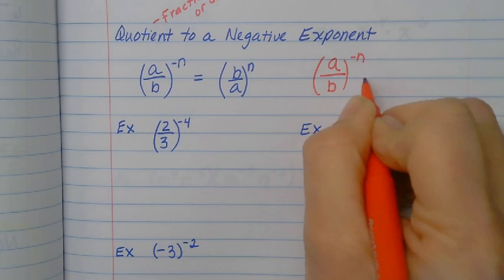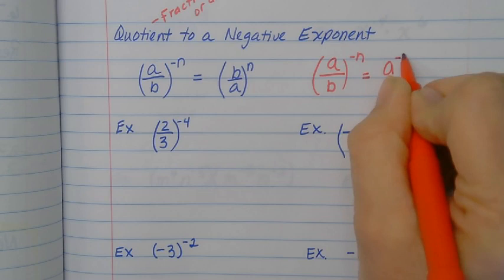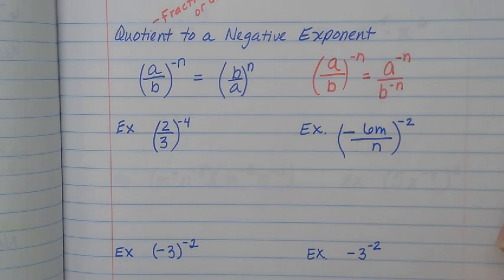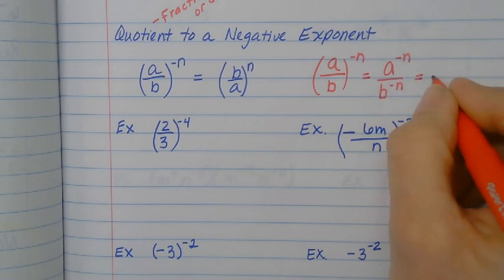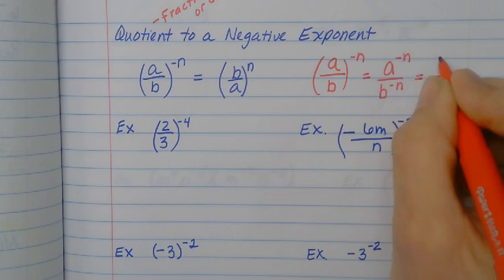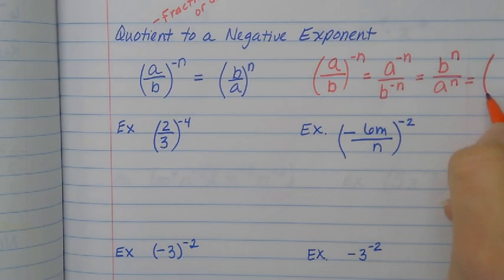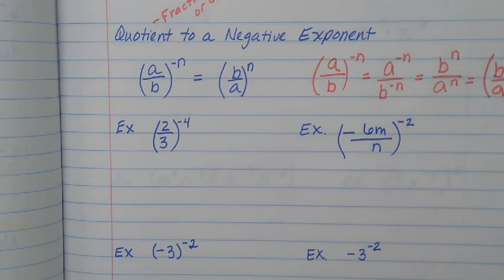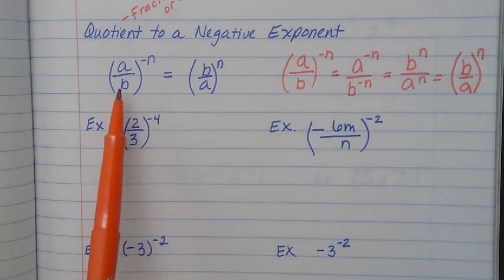Another way to look at it: we can distribute that negative exponent to both a and b using our power rules. Then to change a to positive it goes in the denominator; to change b to positive it goes in the numerator. So we can write that as b over a, to the n power. That shows all the steps, but the reciprocal shortcut is quicker.